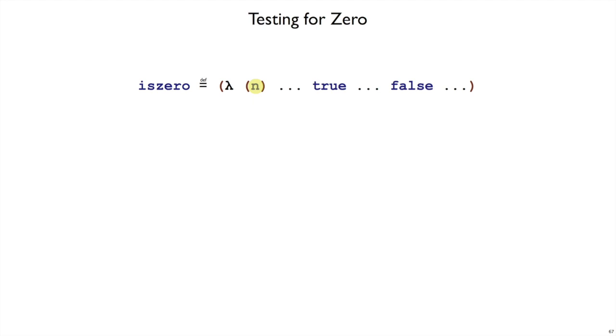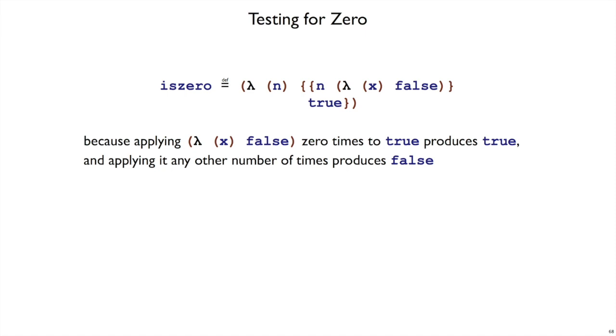To implement is0, we're going to have to rely on the encoding of numbers again. What's different about the encoding of 0 than all other numbers? The difference is that 0 applies the function you give it 0 times. All the other numbers apply the function at least once. So if we create a function that returns false, and if we use this function one or more times, we'll get false out. But if we use it 0 times, we'll get this second argument here to n. We'll get true out.